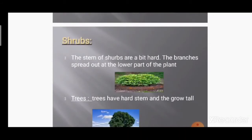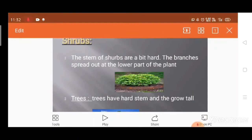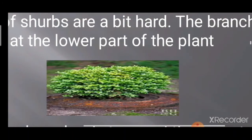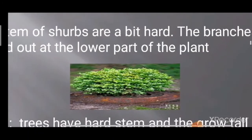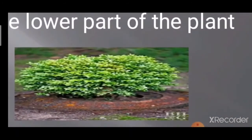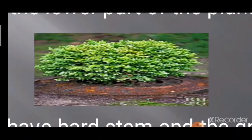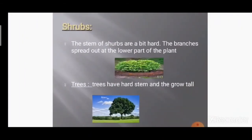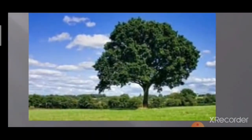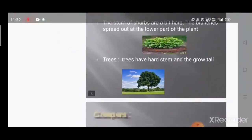Next class is shrubs. The stem of a shrub is a bit hard. The branches spread out at the lower part of the plant. It is also a small plant but the branches are a bit hard and spread out from the bottom. Then next is tree — a tree has a hard stem and grows tall. Example: mango tree, neem tree.